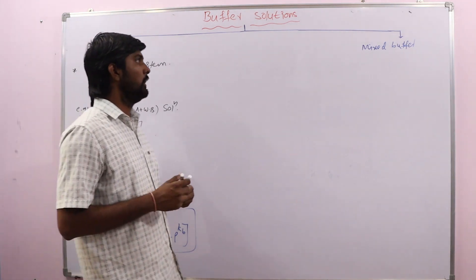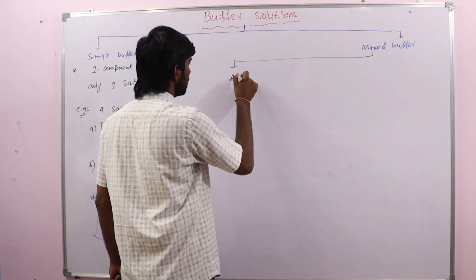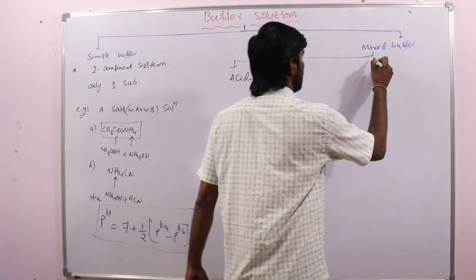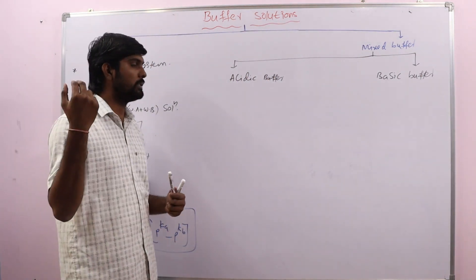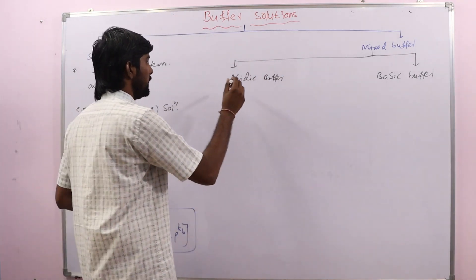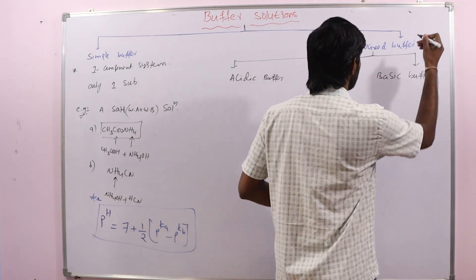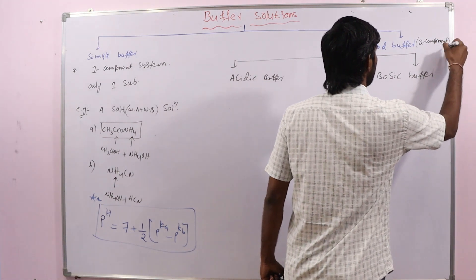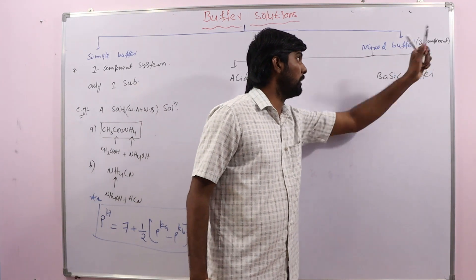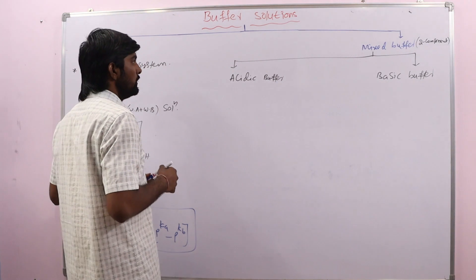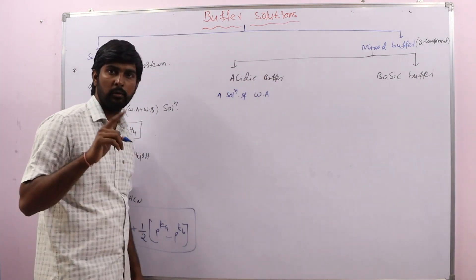Mixed buffer solutions are further classified into two types: acidic buffer and basic buffer. Mixed buffers are two-component systems, meaning they contain two substances. An acidic buffer is a solution of a weak acid plus the salt of the same weak acid with any strong base.